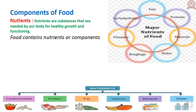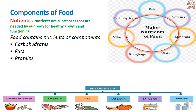The food that we eat contains different nutrients or components. There are five main components of our food: carbohydrates, fats, proteins, vitamins, and minerals.